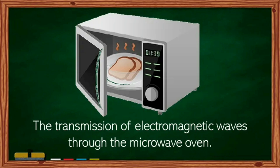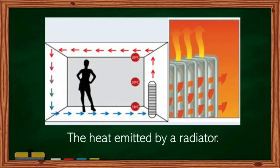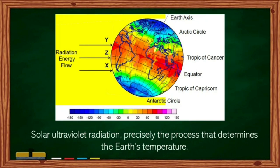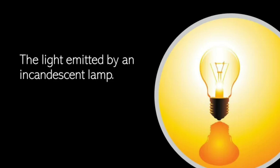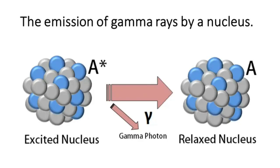Examples of radiation in everyday life include: the transmission of electromagnetic waves in a microwave oven, the heat emitted by a radiator, solar ultraviolet radiation which determines the Earth's temperature, the light emitted by an incandescent lamp, and the emission of gamma rays by a nucleus.